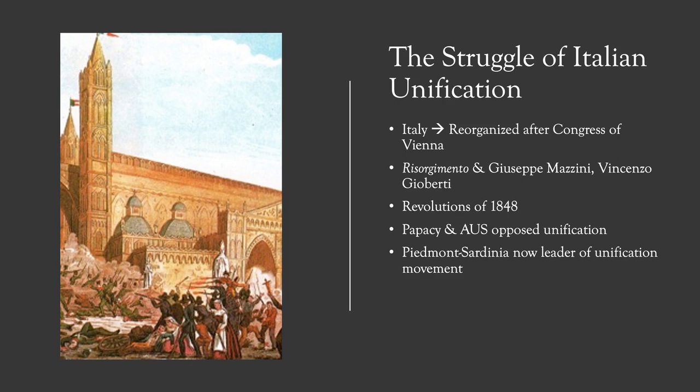The revolutions of 1848 in Italy were largely a failure. They were inspired by France's 1848 revolution, and as a result this led to uprisings in several Italian states, such as Sicily in the south, Lombardy and Venezia in the north, also Rome and in Piedmont-Sardinia. These revolts were largely against conservative governments and had the goal of establishing a liberal, unified government all across Italy.